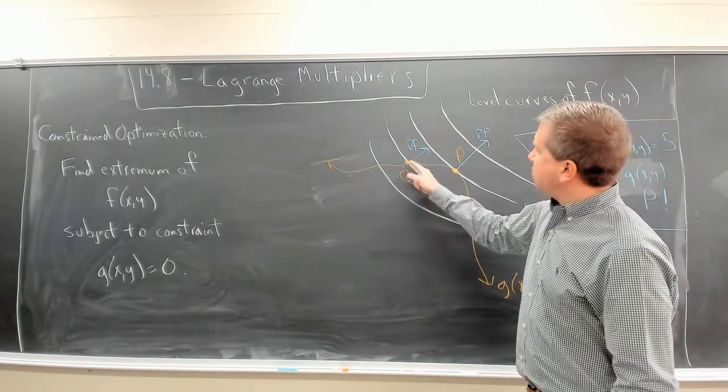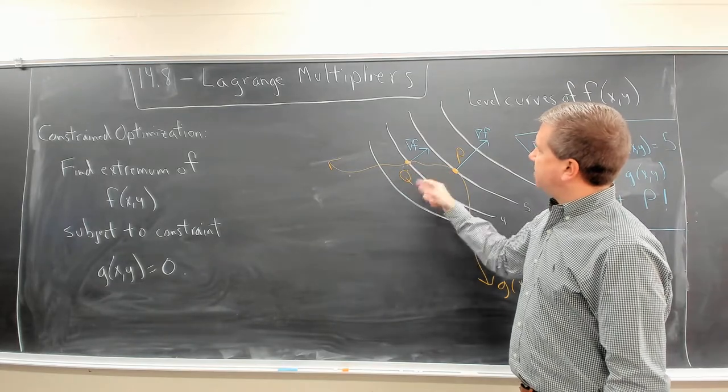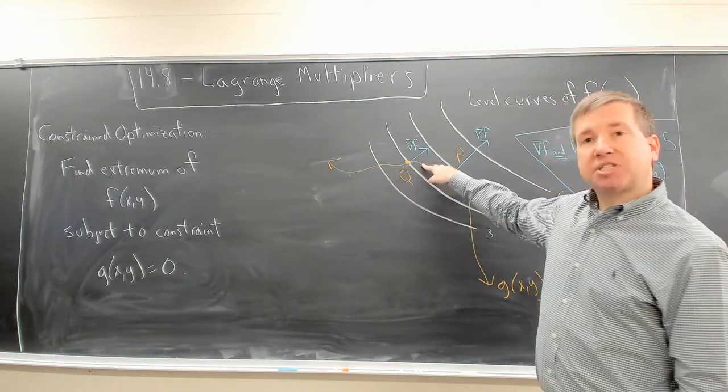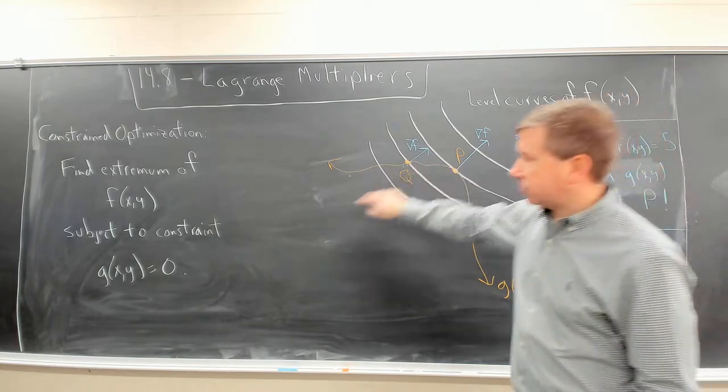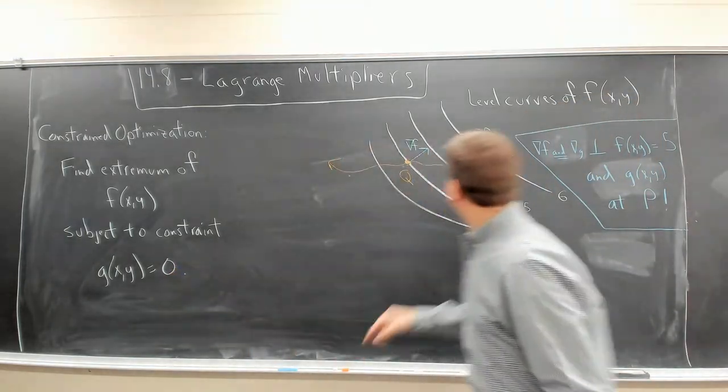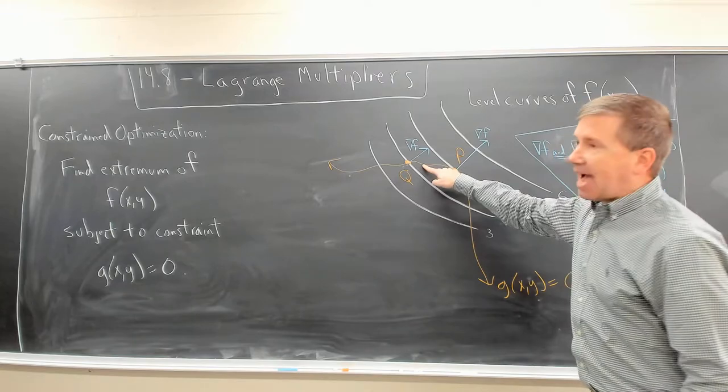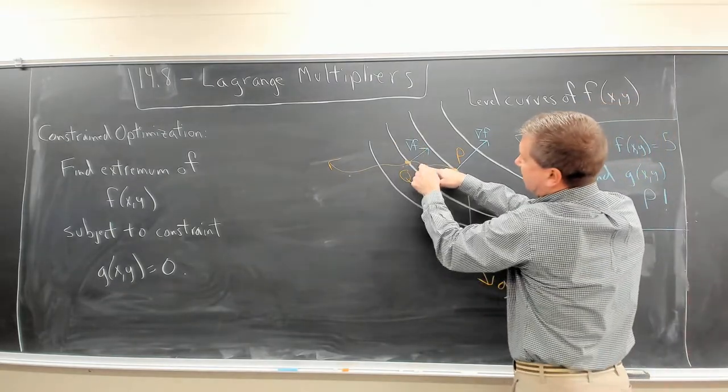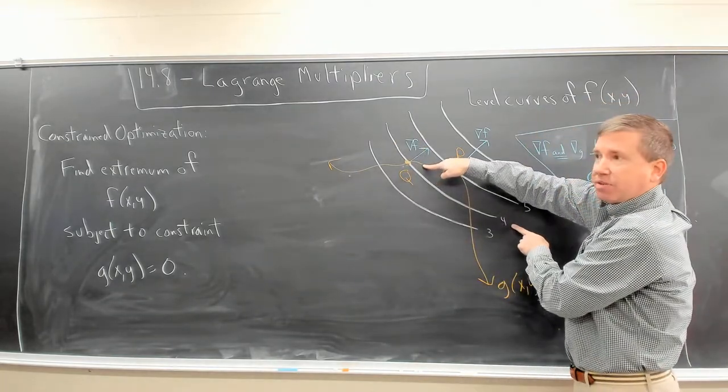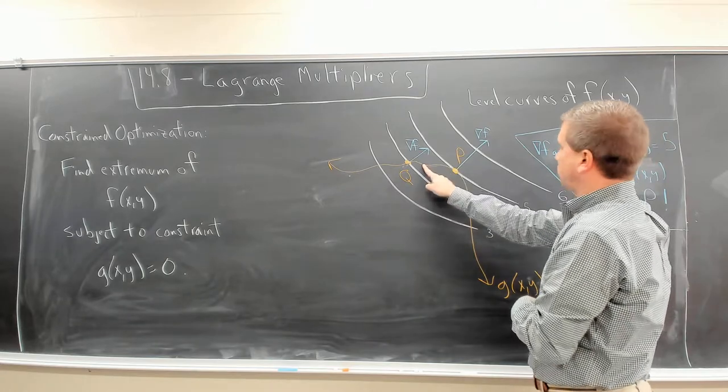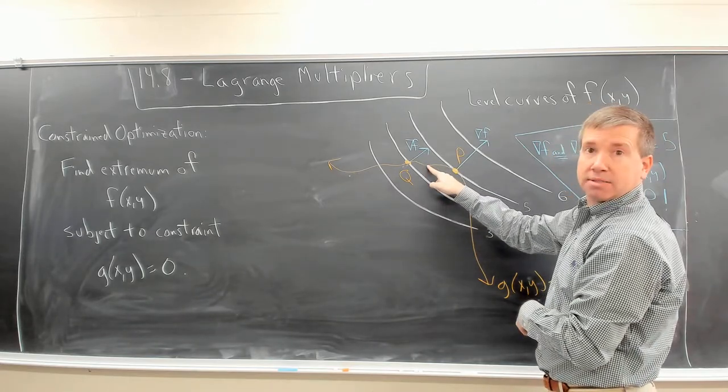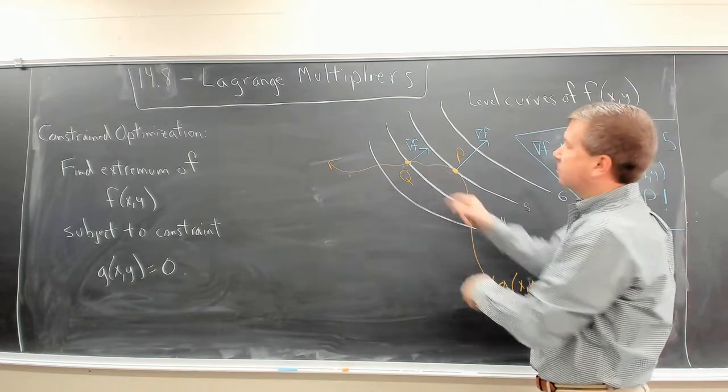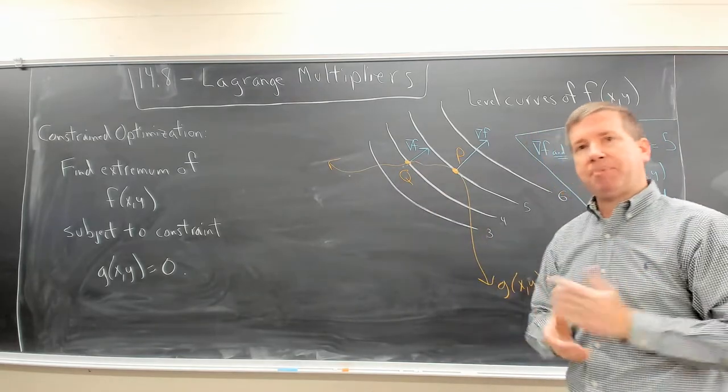I'm still on the constraint curve. So I'm satisfying this. But now, wouldn't I be intersecting a level curve that is bigger than 4? I'm somewhere between 4 and 5 right here. So q cannot be a maximum.